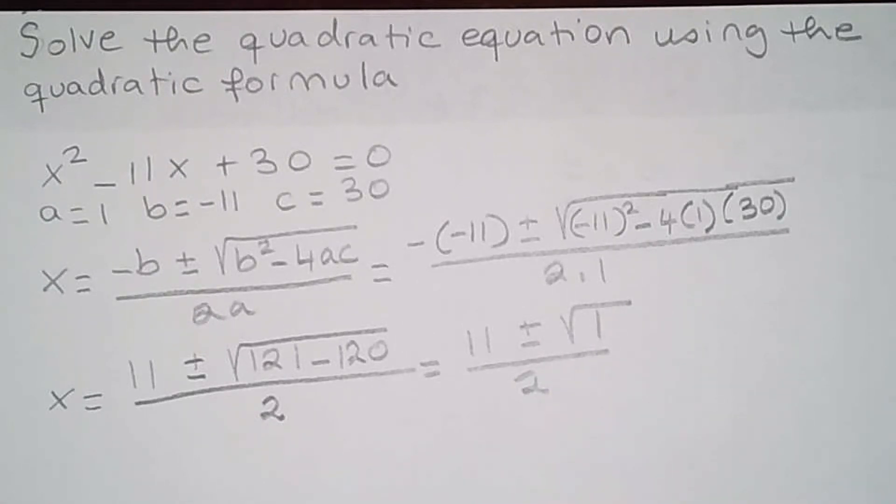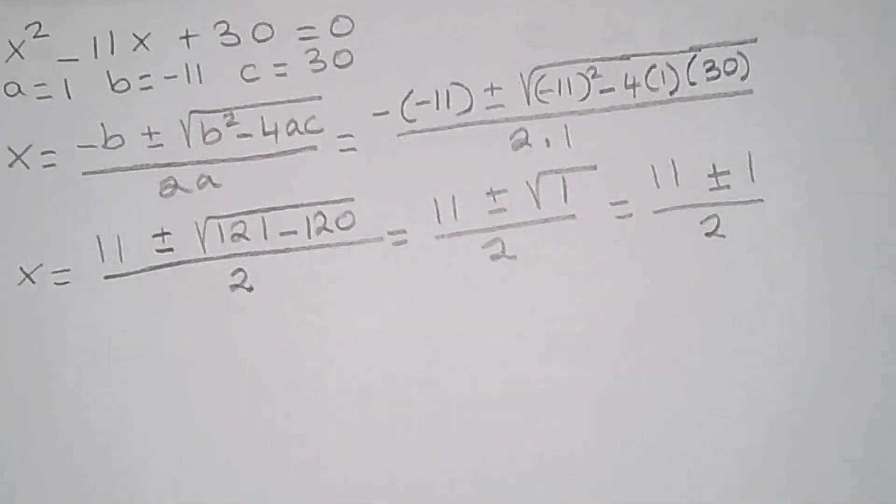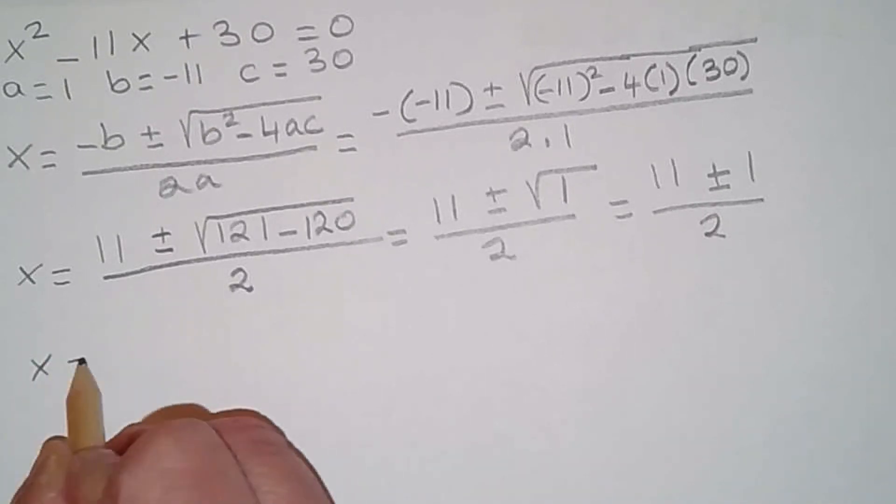So this becomes 11 plus minus square root of 1 is simply 1 divided by 2. Notice I don't have the radical anymore, it's simplified. So I'm gonna separate my answers.